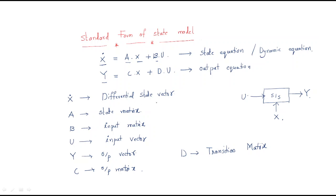To summarize: X-dot is the differential state vector; A is the state matrix; B is the input matrix; U is the input vector; Y is the output vector; C is the output matrix; D is the transition matrix. We will discuss each term in depth in upcoming videos.